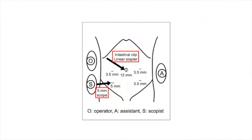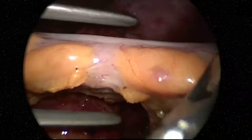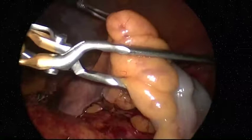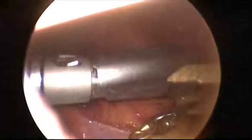A 5 mm scope is inserted through the right lower 5 mm port, and forceps, an intestinal clip, and an articulated type linear stapler are inserted through the 12 mm port for colonic transection. An intestinal clip is placed at the oral side of the colonic cut line. The angle of the clip can be adjusted using an angle adjuster, and the angle of the end linear stapler can be changed as well.